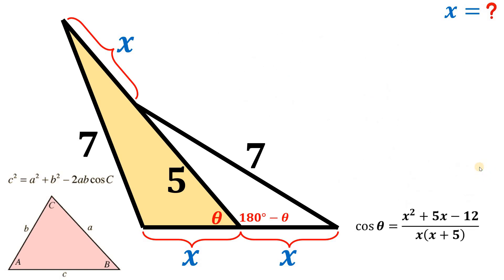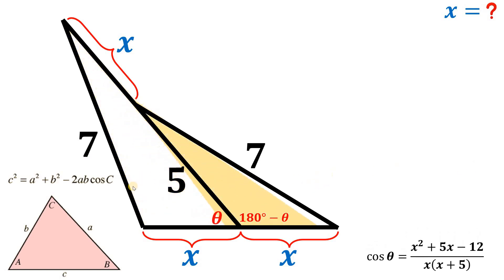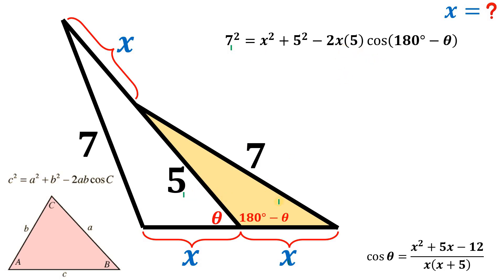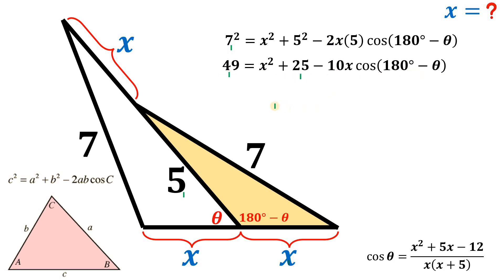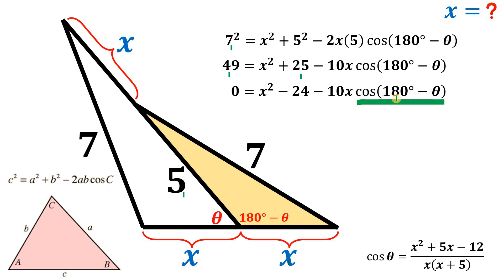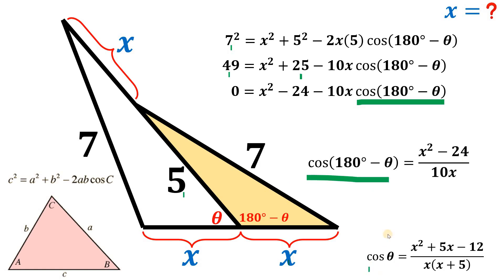Setting aside that result, we now apply the Law of Cosines to the second triangle: 7² = x² + 5² − 2(x)(5)·cos(180° − theta). Simplifying: 49 = x² + 25 − 10x·cos(180° − theta). Combining like terms gives x² − 24 = 10x·cos(180° − theta), so cos(180° − theta) = (x² − 24) / (10x).